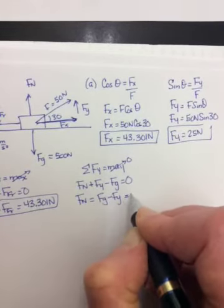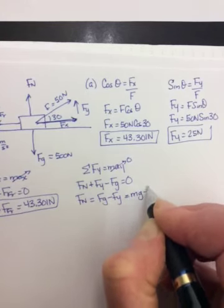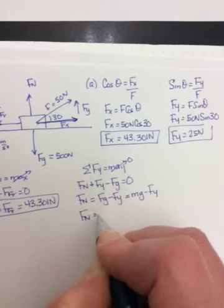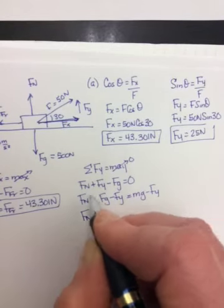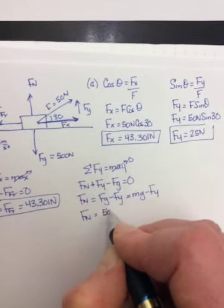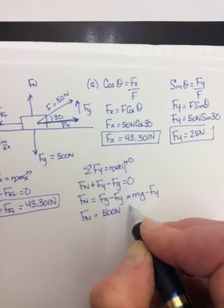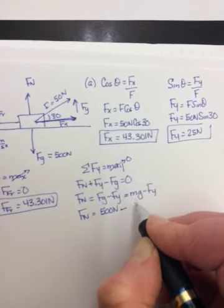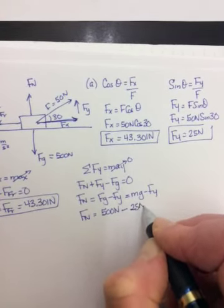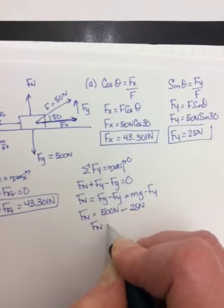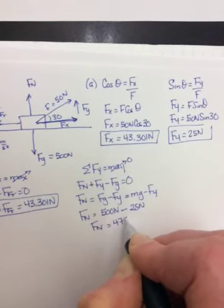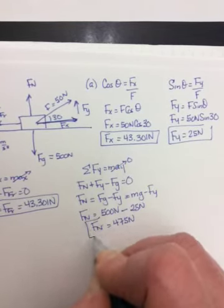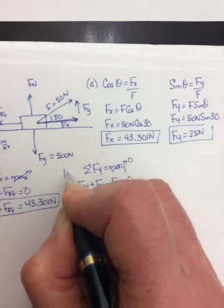And Fg is just mg, so we have mg minus Fy. So Fn is equal to, oh, they told us Fg already, 500 newtons, I don't even have to do mg, minus 25 newtons. So Fn is equal to 475 newtons, and that is part C.